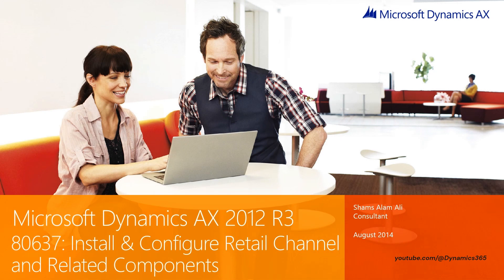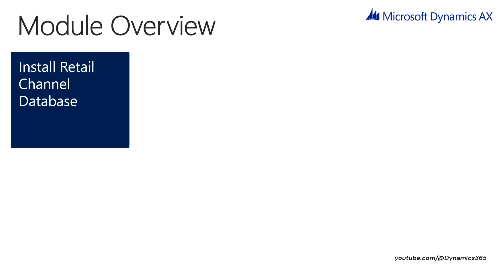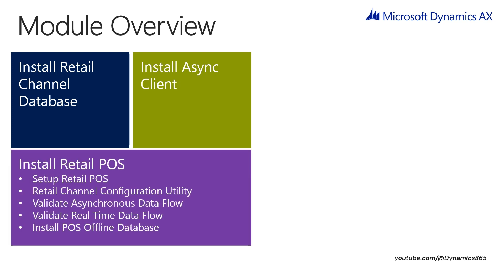Install and configure Retail Channel and Related Components. In this module, let us see how to install and configure Retail Channel and Related Components as part of AX Core Components and Commerce Data Exchange Components. We will be discussing the installation and configuration of: Retail Channel Database, Async Client, and Retail Pause — including setting up Pause, Retail Channel Configuration Utility, Validate Asynchronous Dataflow, Validate Real-Time Dataflow, and Install Pause Offline Database.